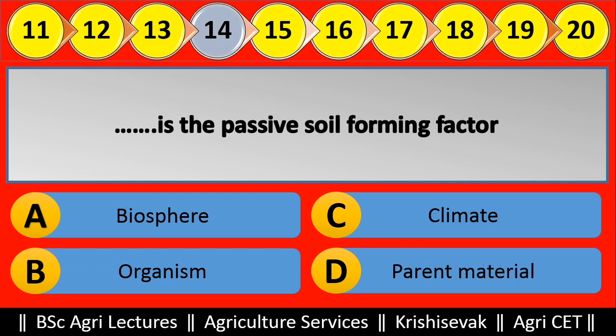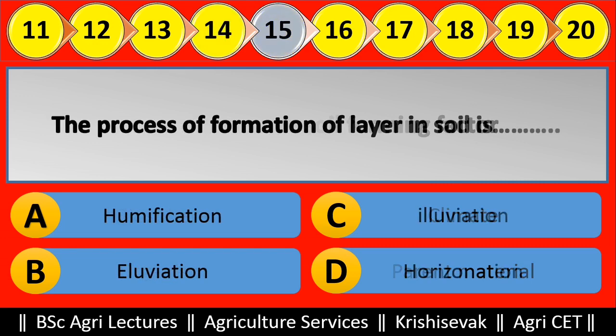Question 14: Blank is the passive soil forming factor. Options are: (a) Biosphere, (b) Organism, (c) Climate, (d) Parent material. Right answer is Parent material, option D.